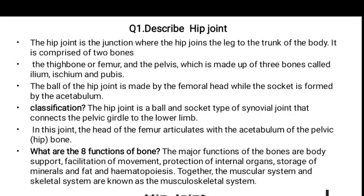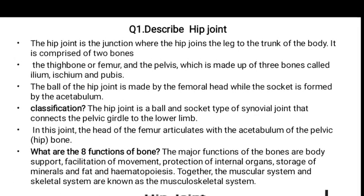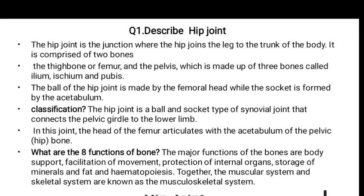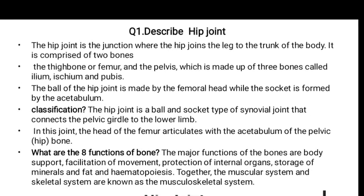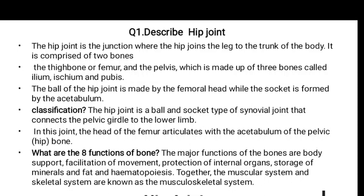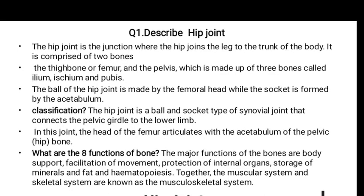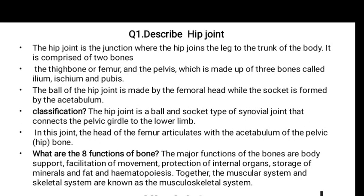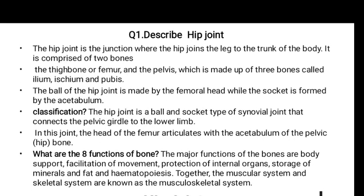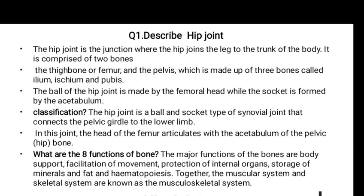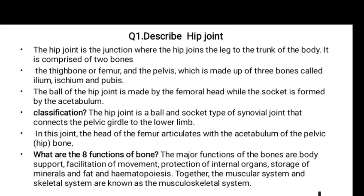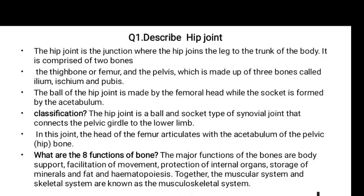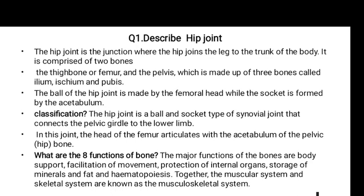Classification of the hip joint: the hip joint is a ball and socket type of synovial joint that connects the pelvic girdle to the lower limb. In this joint, the head of the femur articulates with the acetabulum. The acetabulum is the round socket formed by the bones of the pelvis.